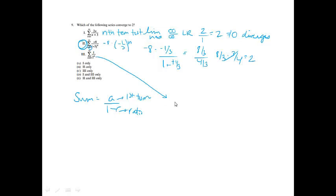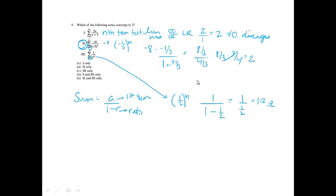Now I check the other one. I can rewrite it as (1/2)^n, so it's also a geometric series. The first term: plugging in n=0, I get (1/2)^0 = 1. So the sum is 1 over 1 minus 1/2, which is 1 over 1/2, equals 2. This series also converges to 2. So it will be series 2 and 3, which is choice E.